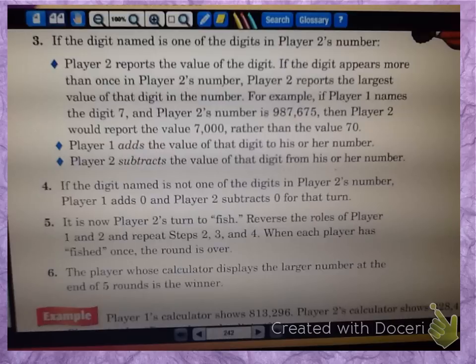If we look at step five, it says it is now player two's turn to fish, reverse the roles of player one and two, and repeat steps two, three, and four. When each player has fished once, the round is over. The player whose calculator displays the larger number at the end of five rounds is the winner.